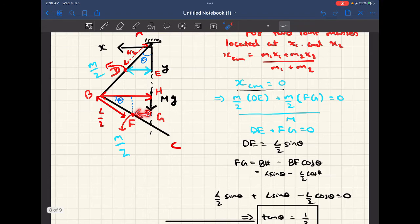So we need to find BH and we need to subtract BF cos theta from it. So BH is this bigger distance and we need to subtract the horizontal component of BF from that. So if we subtract the smaller from the bigger, we'll get this distance FG.